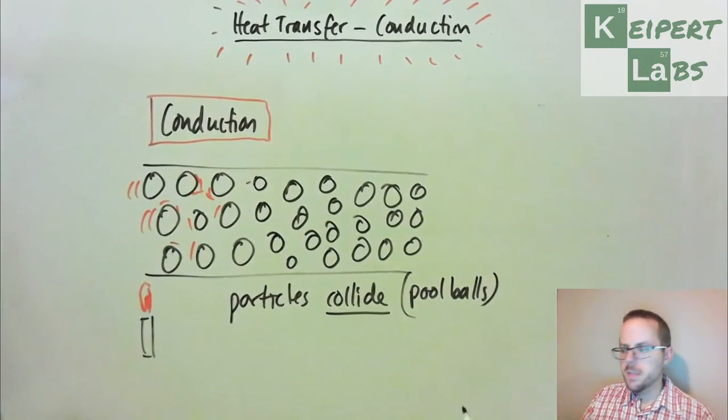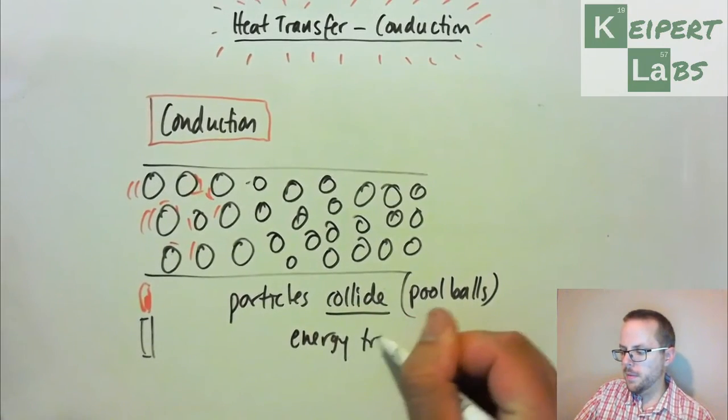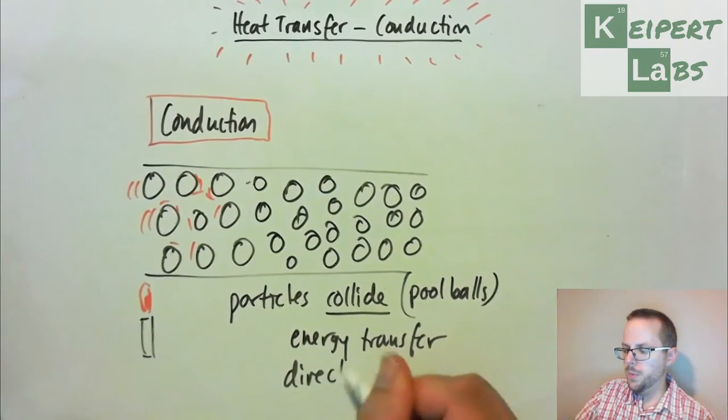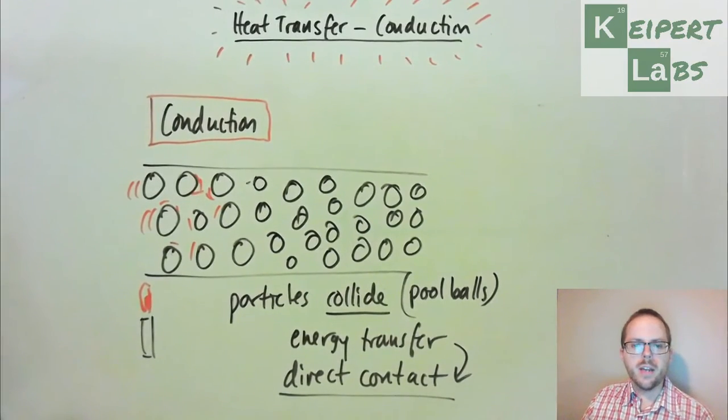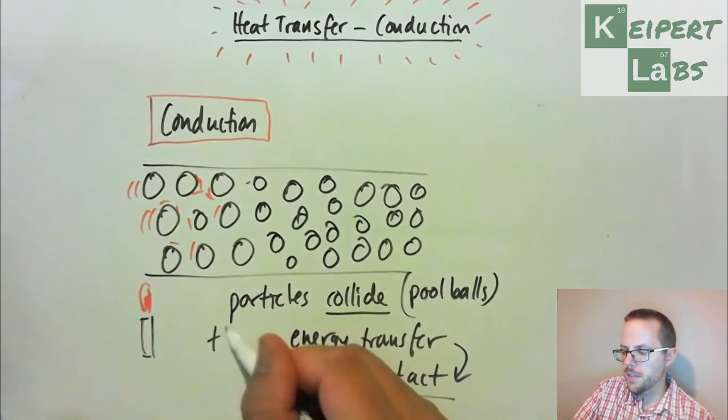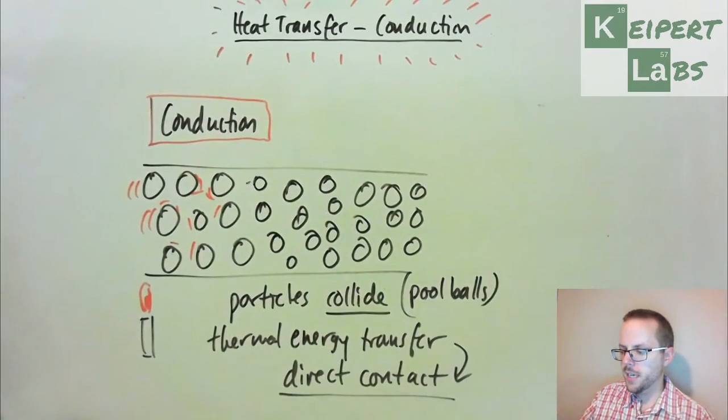But what happens is that these particles start to collide with each other. Okay, so you think about, say, like pool balls on a pool table. So when these particles collide, we get an energy transfer happening. And it's by this thing that we would say, or we would say that it's because there is direct contact between them.